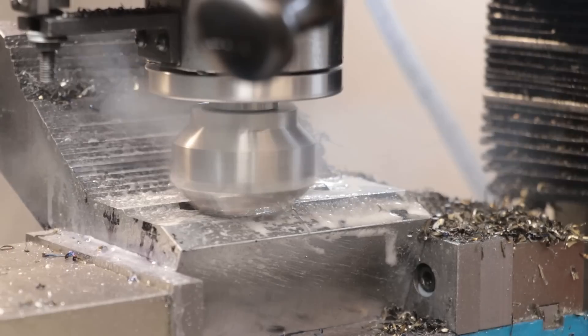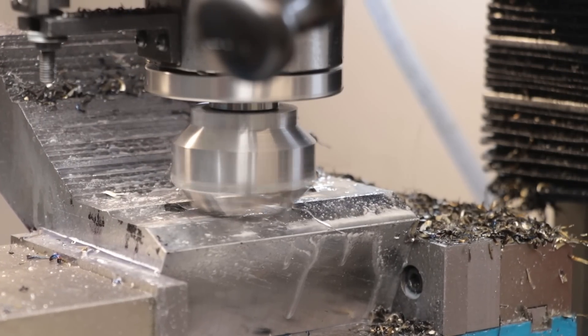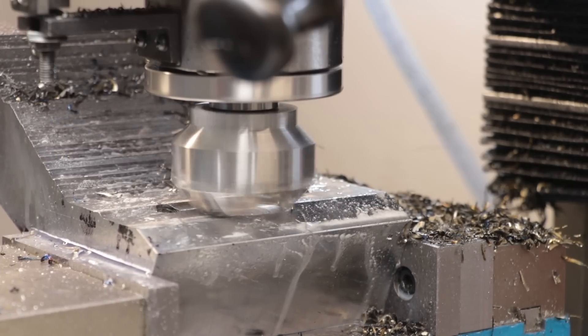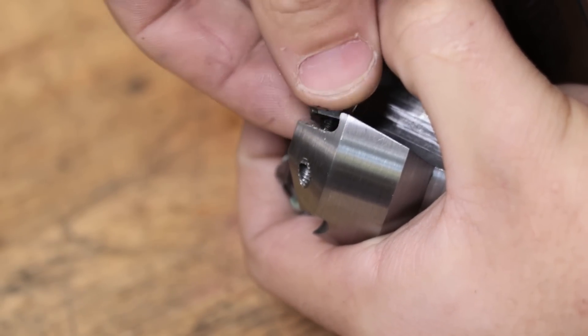And unlike an end mill, where the cutting edge is sort of baked into a complex helix which is quite difficult to sharpen, when the cutting edge breaks on the face mill, I can simply swap out a cutting insert, which is a lot cheaper.